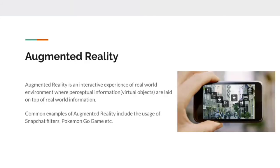Let's understand what augmented reality is before jumping further. Rather than using a conventional definition, let's look at the two terms: augmented and reality. Augment means to enhance something by adding something into it — to better the experience of something by adding to it. So what augmented reality basically means is that reality, the perception you see with your naked eyes, can be enhanced further by adding something on top of it.